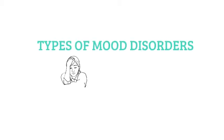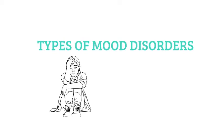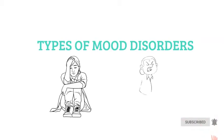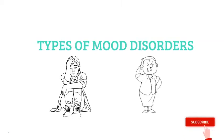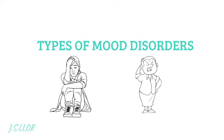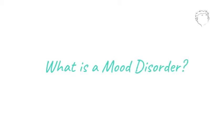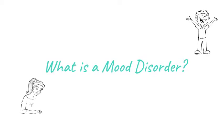Types of Mood Disorders. What is a mood disorder? A mood disorder is a mental health problem that primarily affects a person's emotional state. It is a disorder in which a person experiences long periods of extreme happiness, extreme sadness, or both.